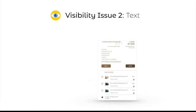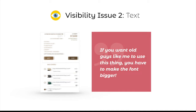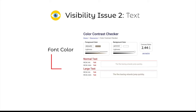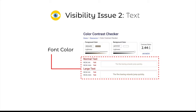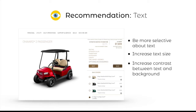Another area of improvement uncovered during our research was the issue of text size and legibility. During our usability test, our oldest user noted, 'If you want old guys like me to use this thing, you have to make the font bigger.' The font for the accessories in particular was described as tiny and hard to read. Also, the gold color of some text does not provide enough contrast. These issues generally become more challenging with age, which could create accessibility issues for Edith. We suggest being more selective about the text that appears in the main configurator screen, increasing its size, and improving contrast between text and background.